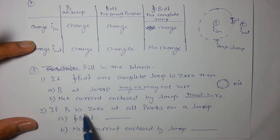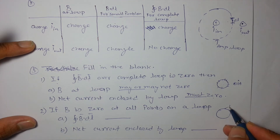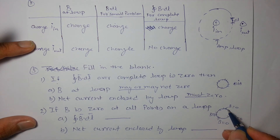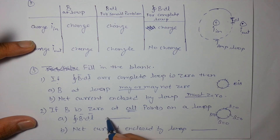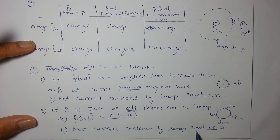Next part: If B is zero at all points on the loop, then B dot dl must be zero — because taking the dot product of zero field with dl at every small portion gives zero everywhere. So B dot dl over the complete loop is definitely zero, and therefore the net current enclosed must also be zero.